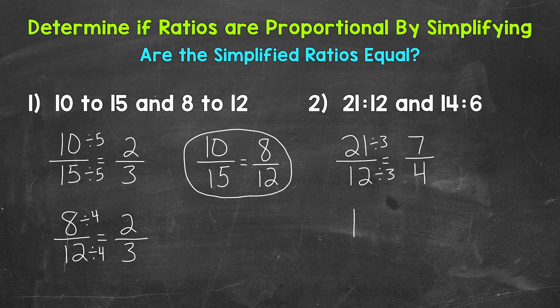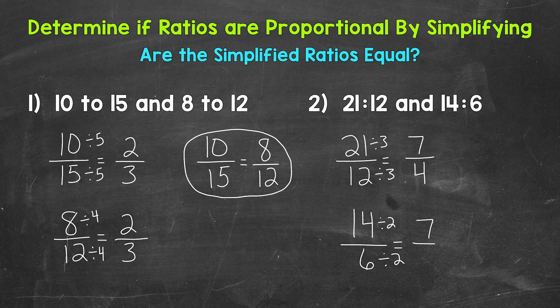Now we need to simplify 14 to 6. The greatest common factor between 14 and 6 is 2, so let's divide our terms by 2. 14 divided by 2 is 7, and 6 divided by 2 is 3. The greatest common factor between 7 and 3 is 1, so we are in simplest form. 14 to 6 simplifies to 7 to 3.